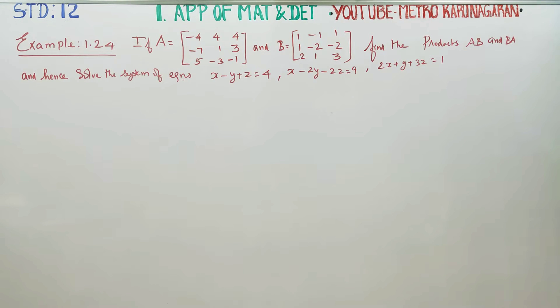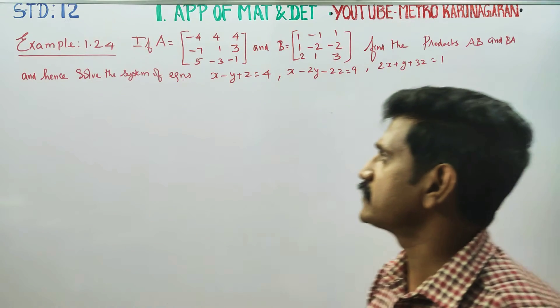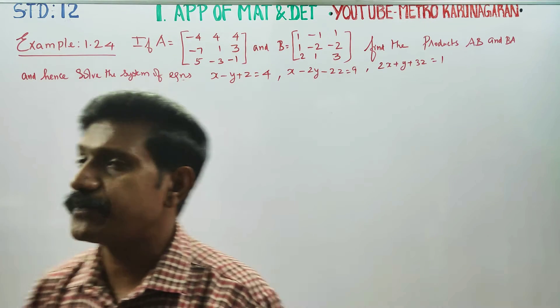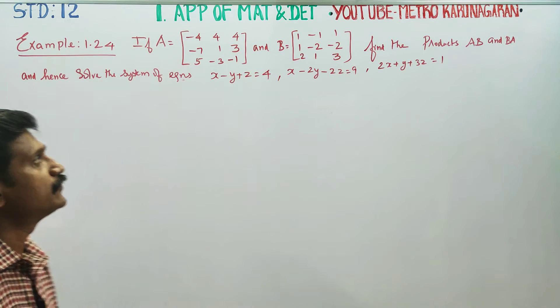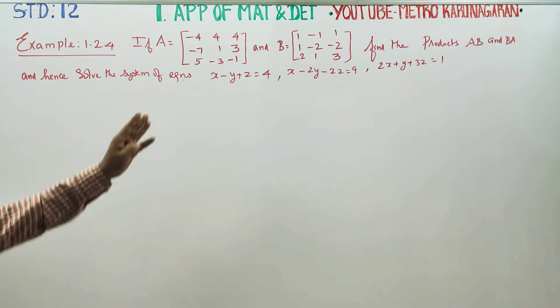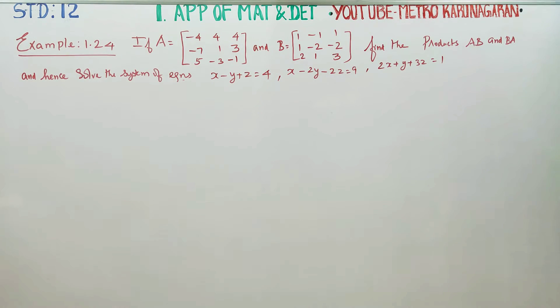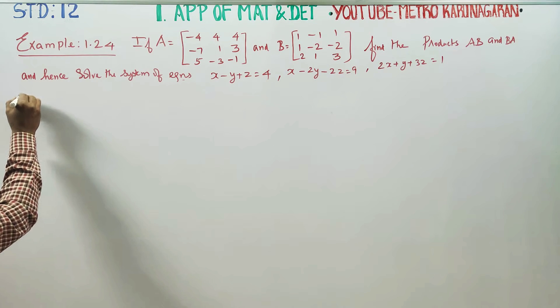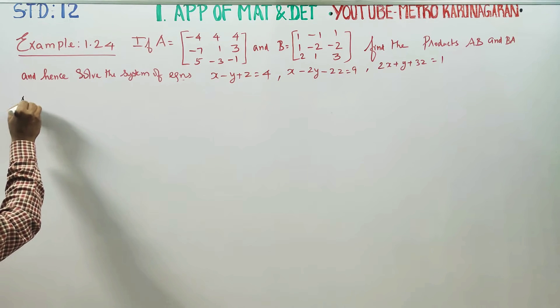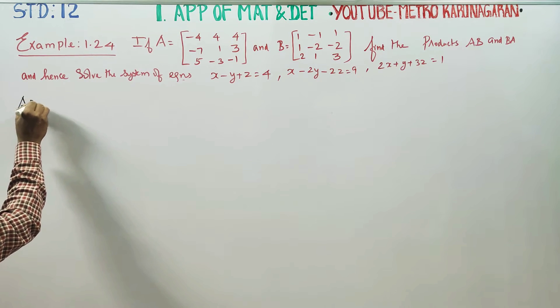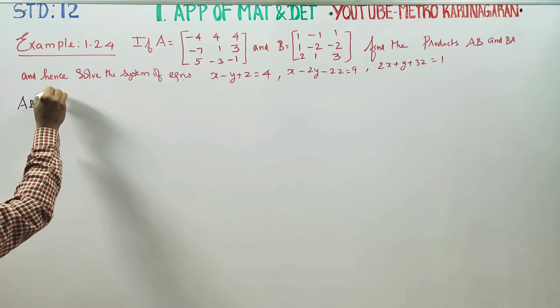Dear Tollstandard students, I am Metro Karnagaran. In Applications of Matrices and Determinants, Example 1.24, find the products of A, B and B, A. First I am going to start my product A, B.